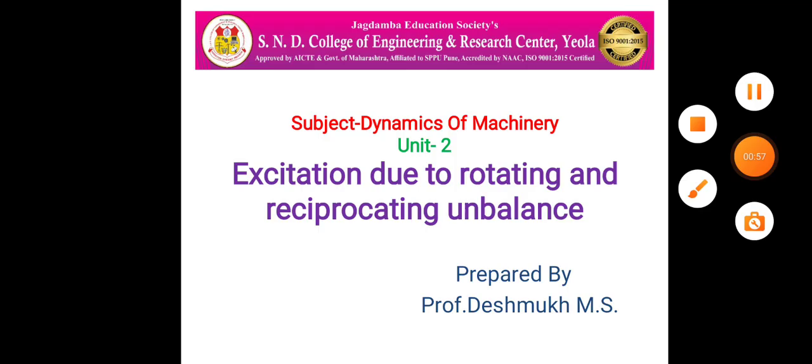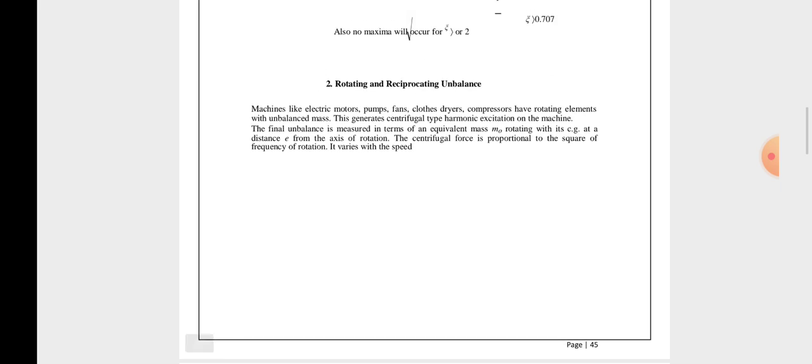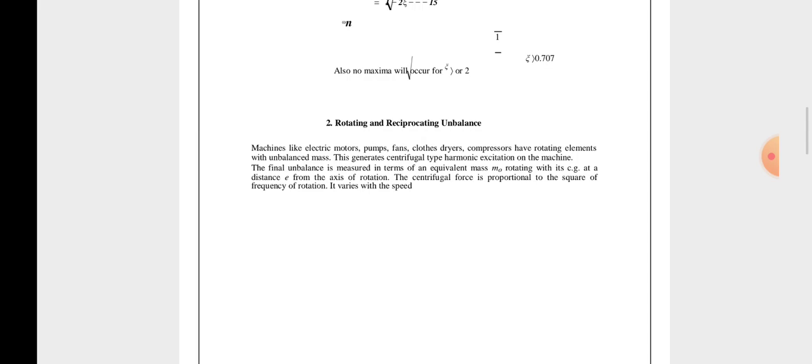Now look at this - rotating and reciprocating unbalanced masses. The machines like electrical motors, pumps, plants, dryers, compressors have a rotating element with the unbalanced mass which generates the centrifugal type harmonic excitation on the machines. The final unbalance is measured in terms of equivalent mass m0 rotating with its CG at distance of e from the axis of rotation.